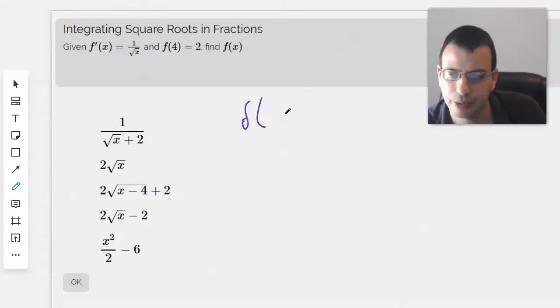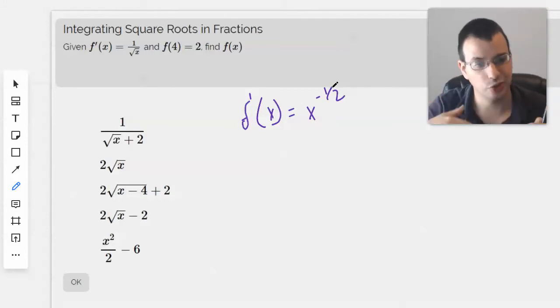Let's start by rewriting the problem. f prime of x equals x to the negative 1 half. The 1 half means square root and the negative means it's on the bottom.